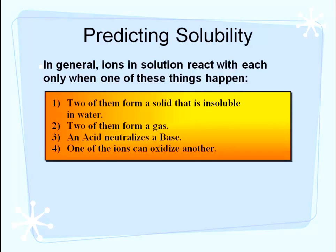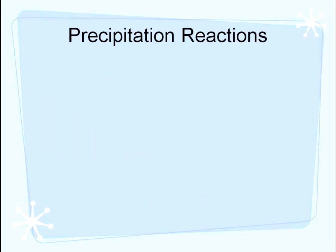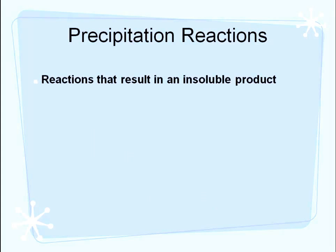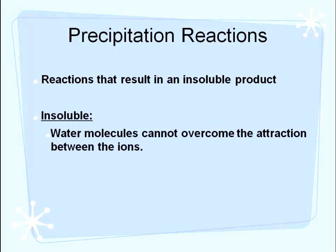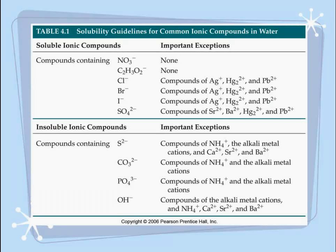Types two, three, and four we'll talk about a little later on. Right now, when we're talking about solubility, we're going to focus on number one — so how can we predict when an insoluble solid will form? A precipitation reaction is one in which a solid product will form; one of the products will not be soluble in water. The reason they're insoluble is because the water molecules cannot overcome the attraction between those ions, so the ions are held together so tightly that the water can't come in and dissociate them.